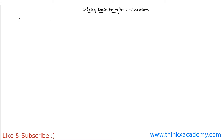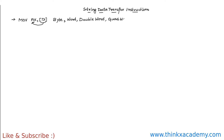So the topic is string data transfer instructions. First, I am going to show you how it is different from the traditional data movement instruction. Consider a sample instruction like MOV AX, DI. In this type of instruction, we can actually transfer 1 byte or 2 bytes of data. The limitation of these instructions is that they can only deal with a single data item. So if we have strings of data, these will not be able to help us, and for that we have the string data transfer instructions.